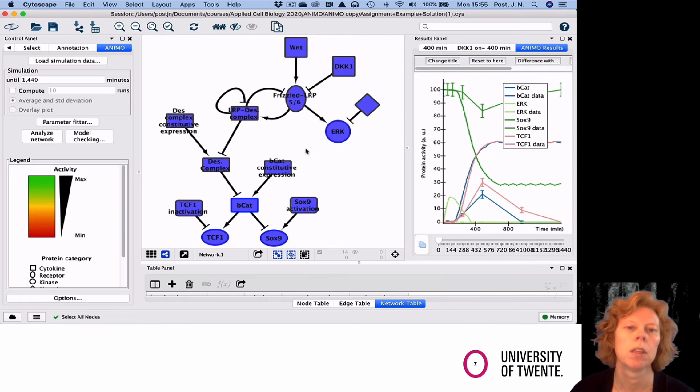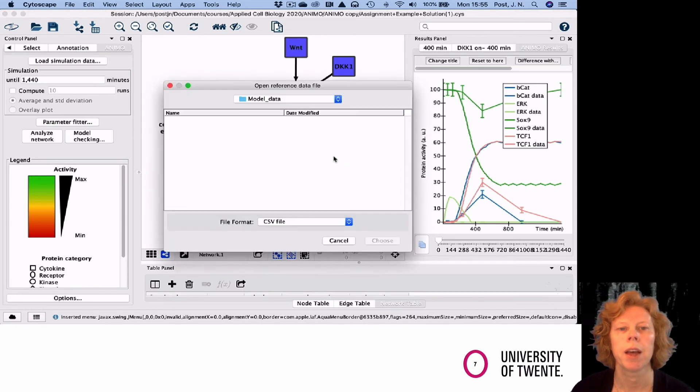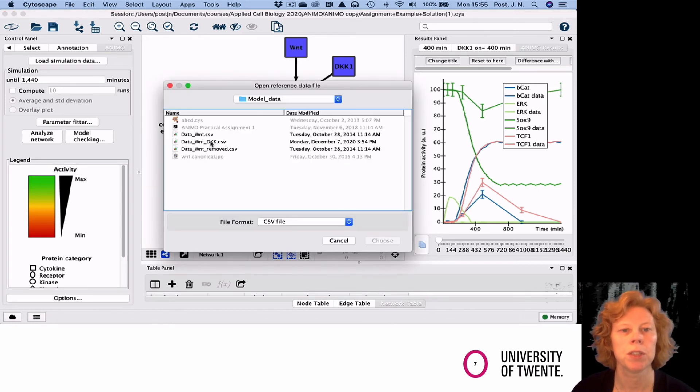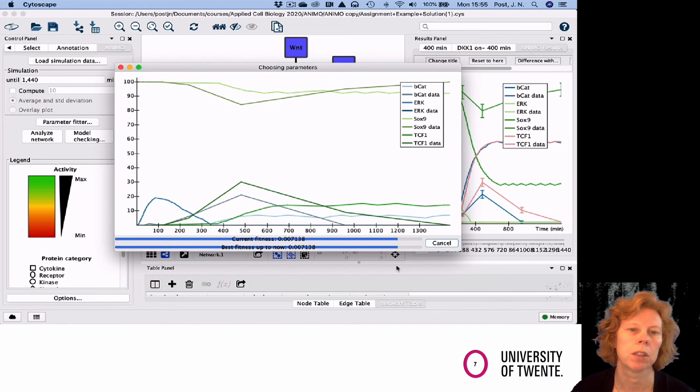I now select all, and then click on one of the interactions, ANIMO, optimize k values. This allows me to choose my CSV file. It will immediately start running. This may take a while, depending on the number of interactions that you want to modify and how well the topology of your network is.